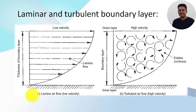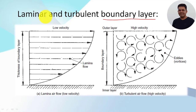In the context of vehicle aerodynamics, we need to understand two types of boundary layer. A detailed description of the boundary layer has already been covered in my previous video — the link is given in the description below. The two types are the laminar and the turbulent boundary layer.